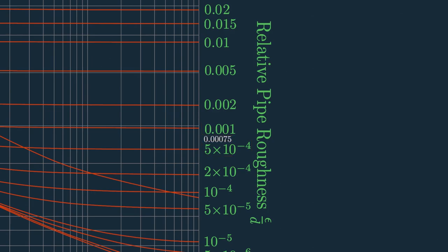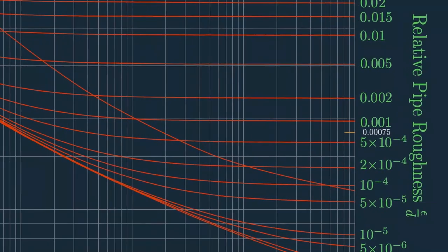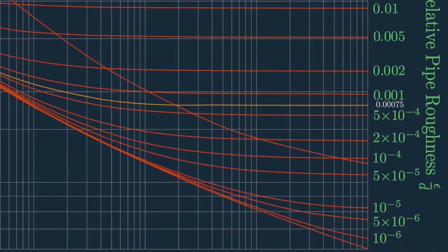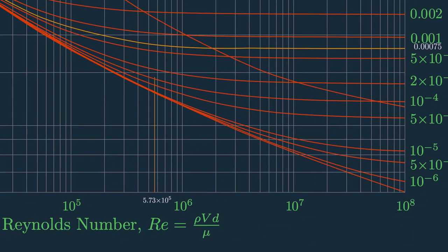So let us do rough interpolation between these two curves. For that, draw a hypothetical curve between them and draw the vertical line from our calculated Reynolds number.